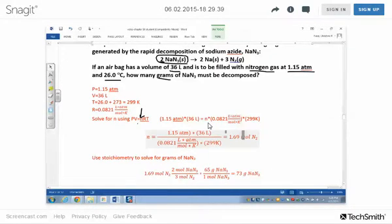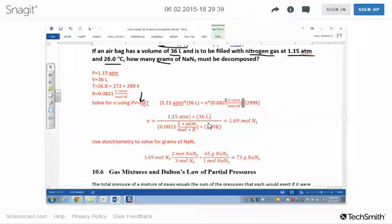So we use the ideal gas law here: PV = nRT. So PV, where's n? That's our unknown. It's R times T. Make sure you put your temperature in kelvin and we solve for n, and you get 1.69 moles of nitrogen.